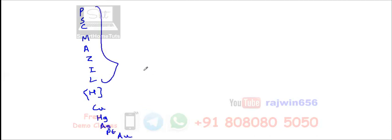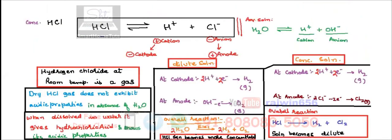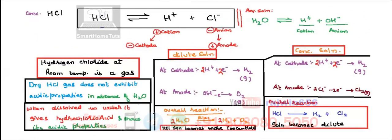Whenever any of these metals are in aqueous solution, hydrogen is lower in the activity series, so for dilute or concentrated solution you are always going to get hydrogen and oxygen. For example, with NaCl and H2O — sodium is above hydrogen in the activity series, so you are never going to get sodium. Whatever metal is above hydrogen, you will never get that metal; you will always get hydrogen and oxygen only, whether dilute or concentrated.